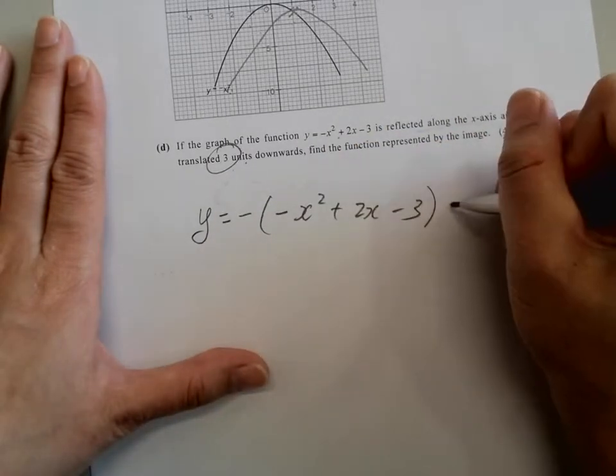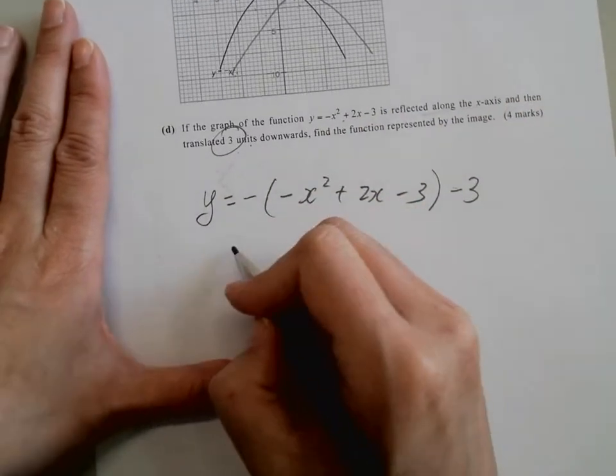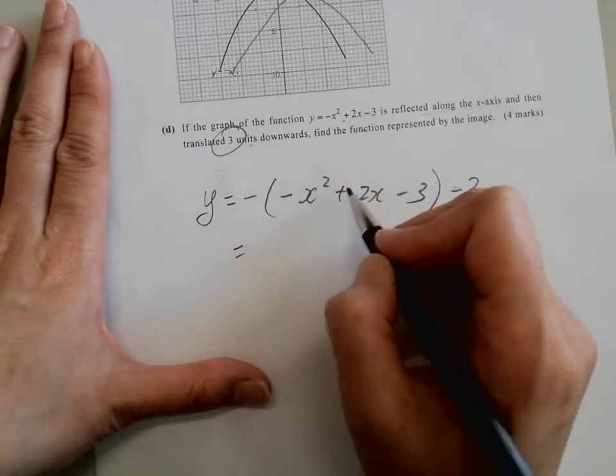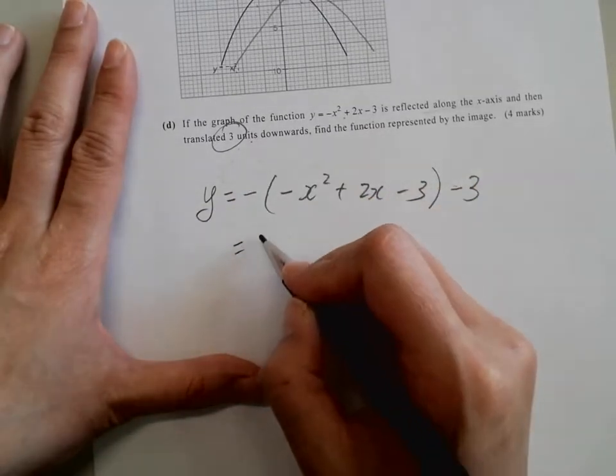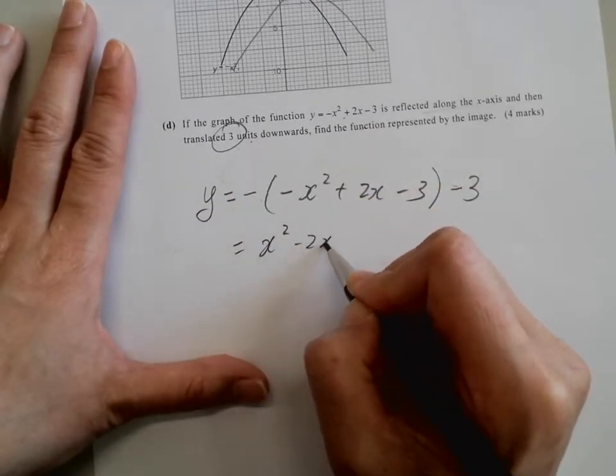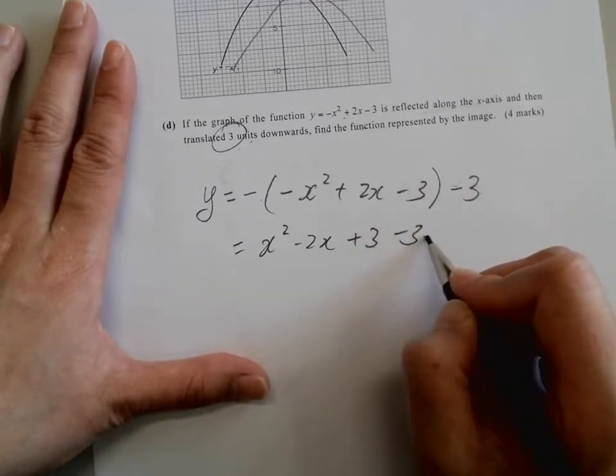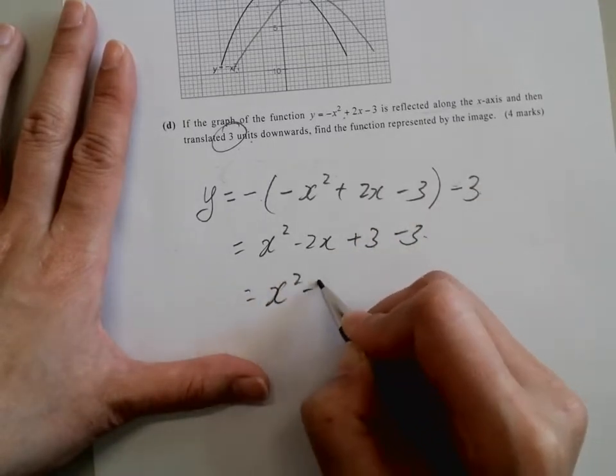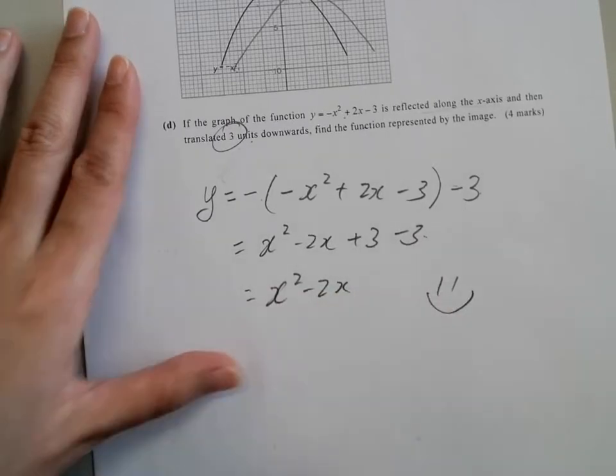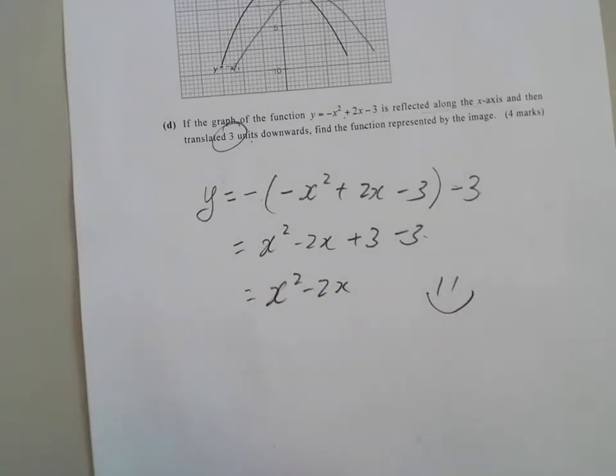And then three units downwards, so minus three again. So now we're going to throw that out, expand it. We have x squared minus 2x plus 3, and then the minus 3 is still there. Simplify that as well. We got x squared minus 2x, and this is the answer. And finally, we finish our revision on transformation.